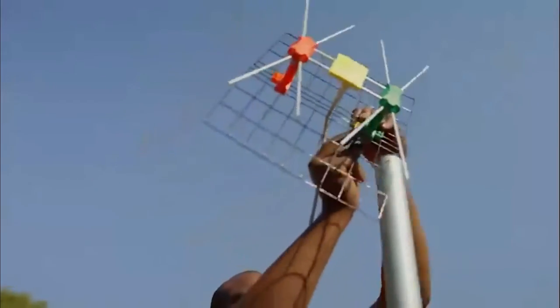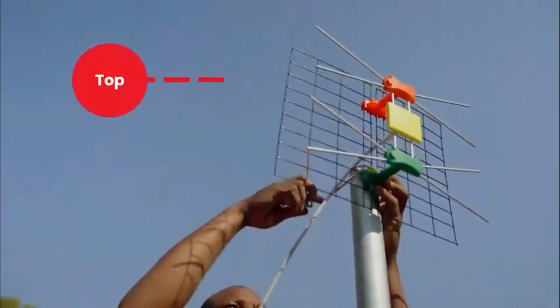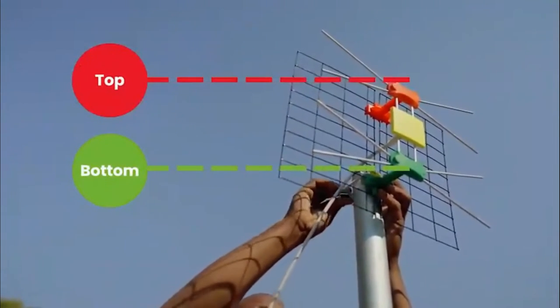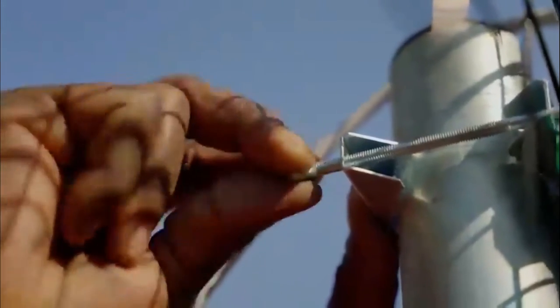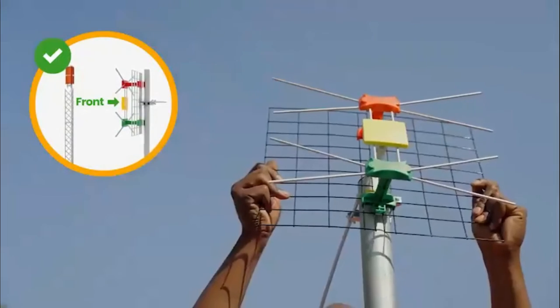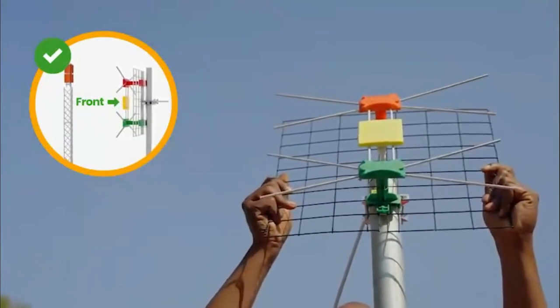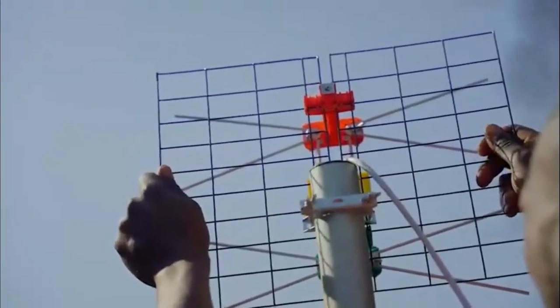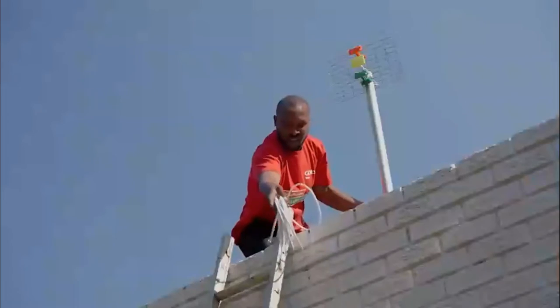Then, mount the GoTenner to the pole like a traffic light with red on top and green on the bottom. Use the brackets provided to fasten it in place. Aim the front of your GoTenner towards the transmitting tower to ensure you receive maximum signal. You may want to look at your neighbor's antenna as a guide. Then, feed the cable into the house.